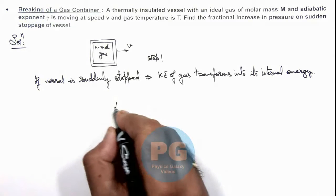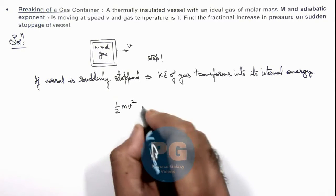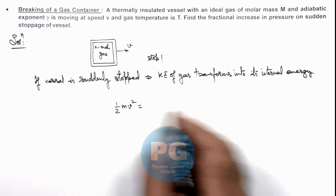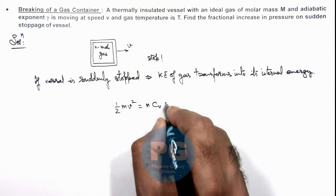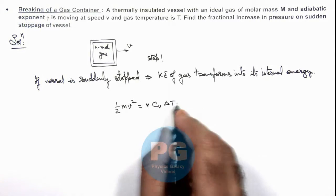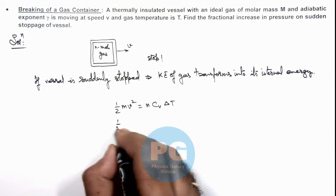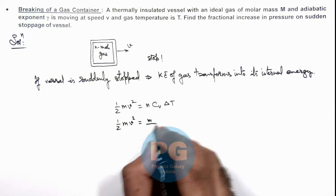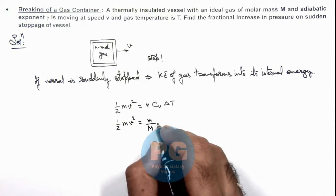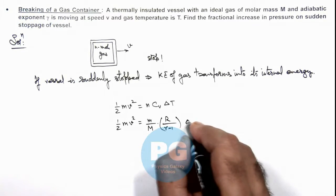Half m v squared is the kinetic energy of gas, and this goes into the internal energy which is n Cv delta T, where delta T is the rise in temperature. So in this situation, half m v squared equals the number of moles (which we can write as mass upon molar mass of gas) and Cv we can write as R by gamma minus 1, multiplied by delta T.